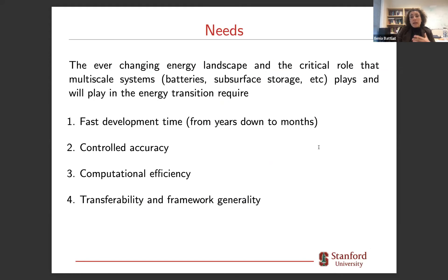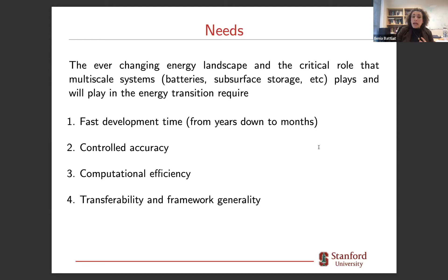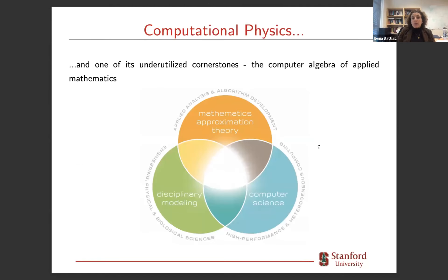This was also happening in an ever-changing energy landscape where multi-scale systems — batteries, energy storage for hydrogen — play a critical role in the energy transition. We needed fast development time: cutting model development from years down to months. We also needed controlled accuracy, computational efficiency, and transferability and framework generality. We decided to look at what we think is a quite underutilized cornerstone of computational physics: computer algebra and applied mathematics.